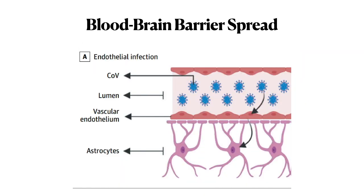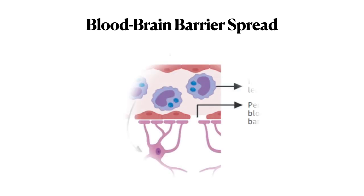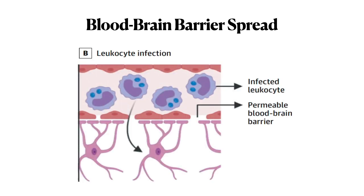The virus can also enter the brain through the blood-brain barrier via endothelitis — causing inflammation of the endothelium and entering the brain through infected endothelium. Another mechanism is the Trojan horse approach, where infected leukocytes pass through a permeable blood-brain barrier to enter the brain and cause infection.